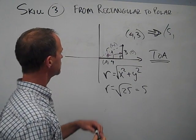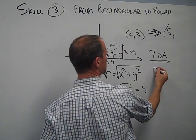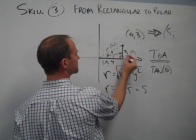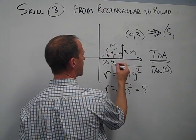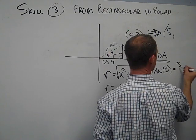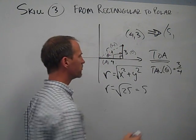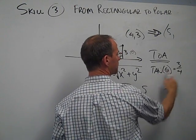So how do we do that? Well, we say that the tangent of theta, the tangent of this angle is equal to 3 over 4, the opposite over the adjacent. So then to solve for the missing angle, we do the inverse tangent of both sides.